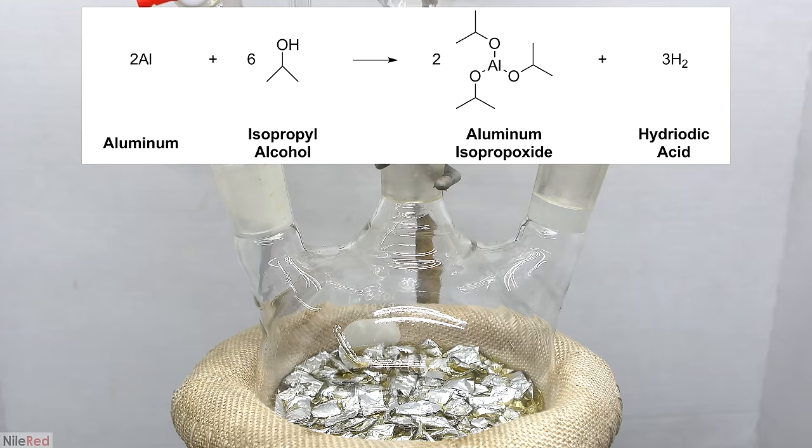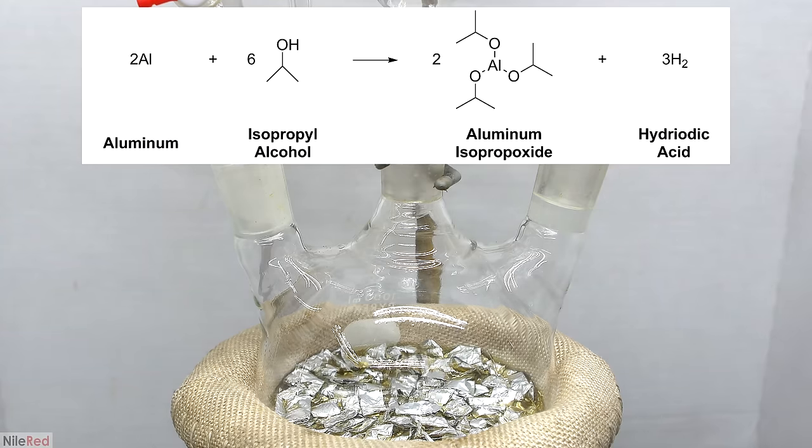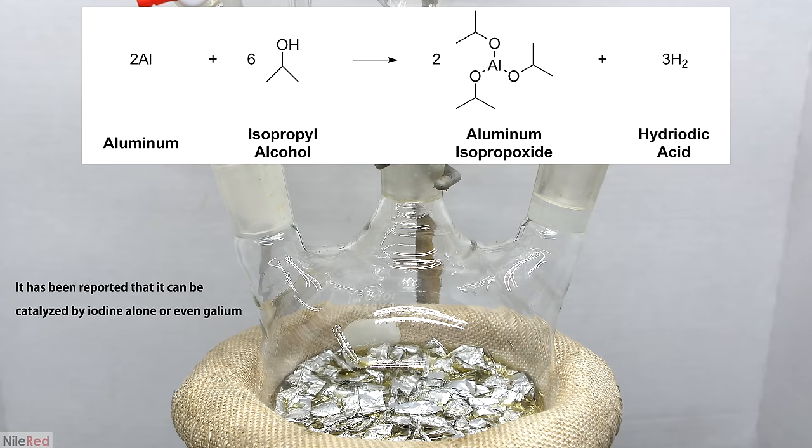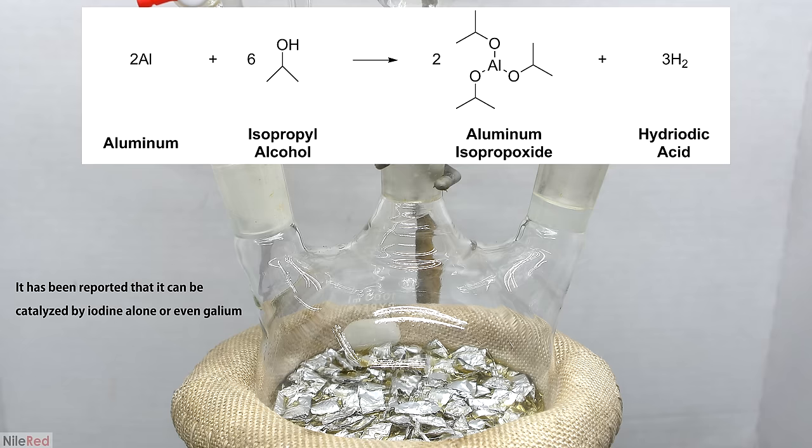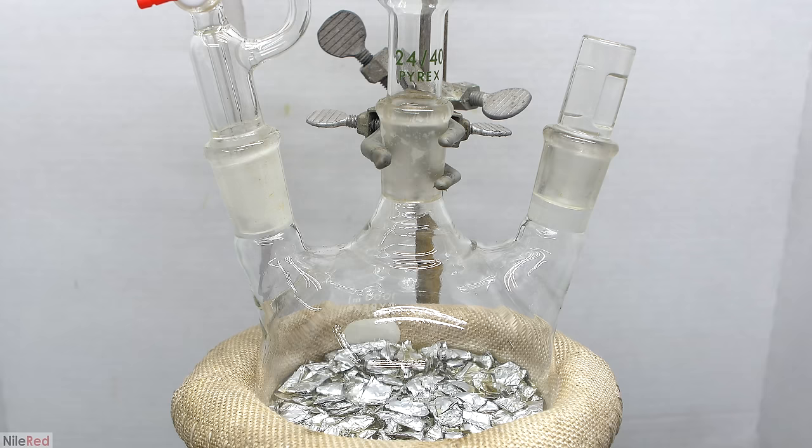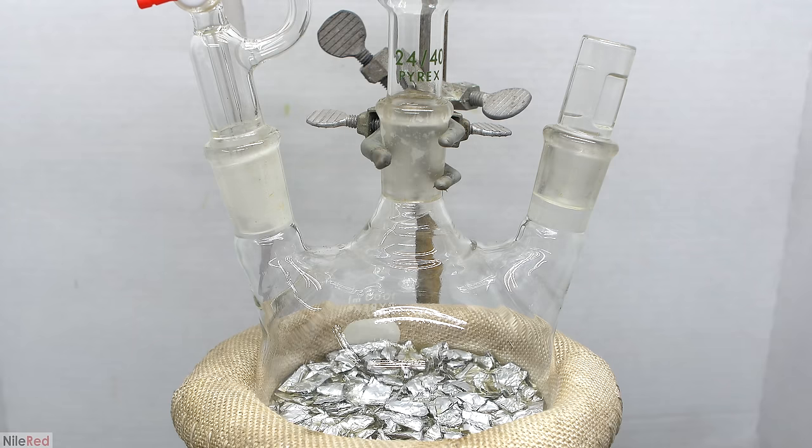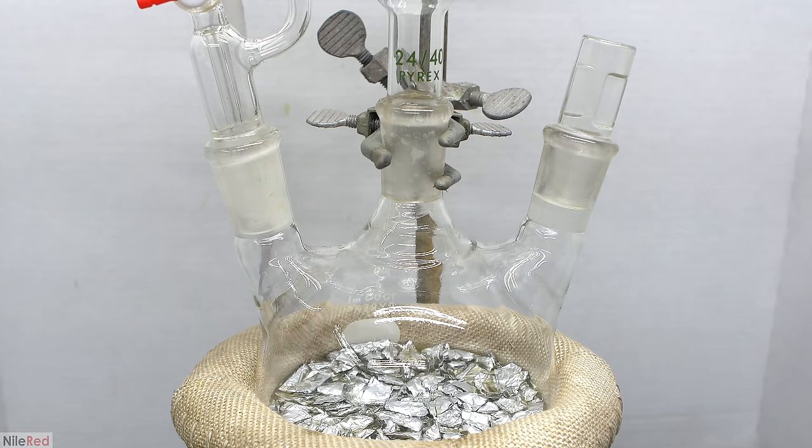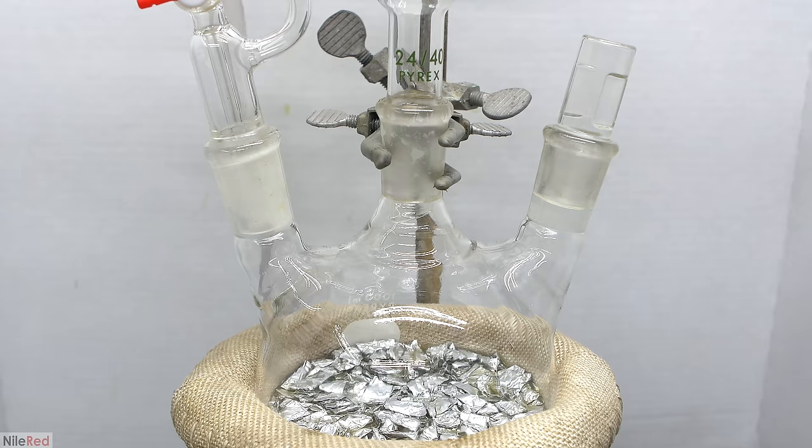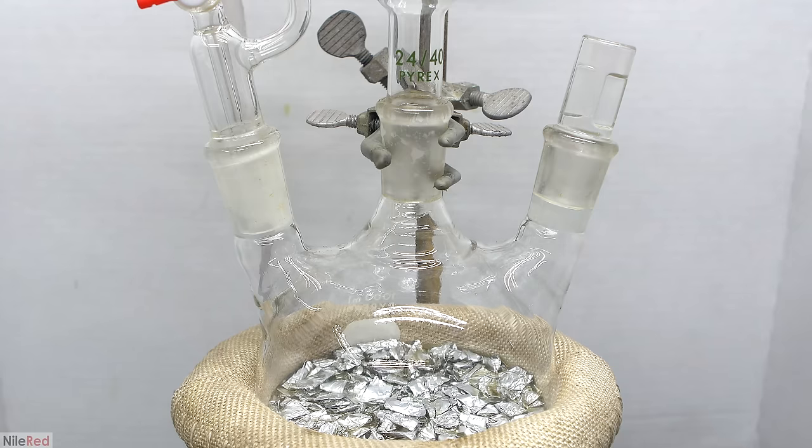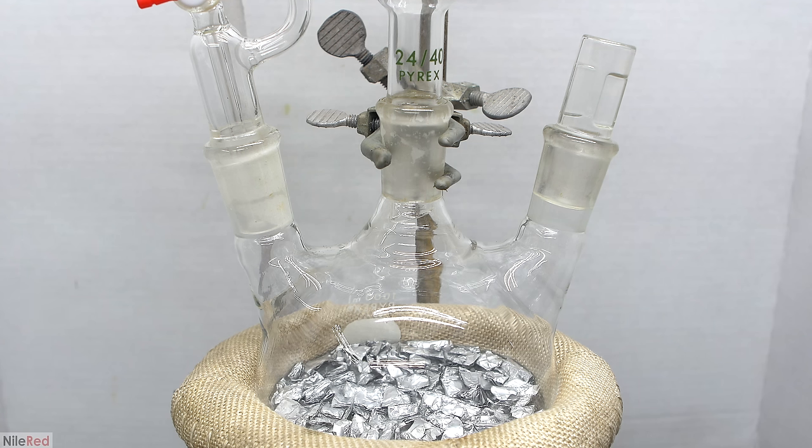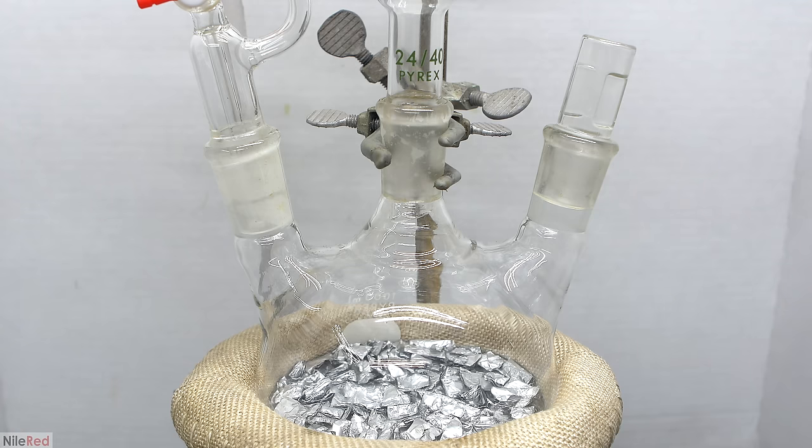The reaction we're carrying out is between the aluminum and isopropyl alcohol to produce aluminum isopropoxide. The reaction is catalyzed by both mercuric chloride and iodine. When fresh aluminum metal is exposed to air, it quickly reacts to form an oxide layer on the surface. This oxide layer acts as a physical barrier and prevents the metal from undergoing further oxidation. With this oxide layer, our aluminum is pretty inert, and if we want things to react, we need to get through this protective barrier.